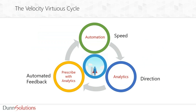We believe most every organization should strive for velocity, which enables the velocity virtuous cycle — a feedback loop that uses the vast amounts of data created through process automation to provide insight through analytics. Those insights are then fed back into the business process for improvement and optimization. With Dunn Solutions' advanced predictive and prescriptive analytic capabilities, this feedback loop will accelerate speed and dial in direction as market conditions or business climate changes. A key part of velocity is to provide business insight from data to your business users.